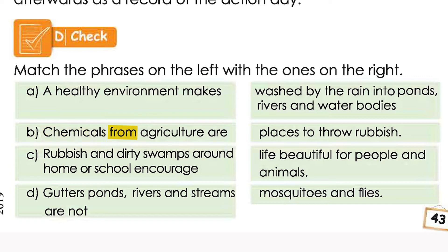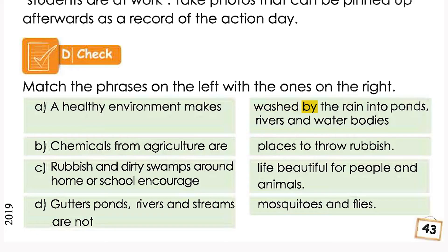A: A healthy environment makes. B: Chemicals from agriculture are. C: Rubbish and dirty swamps around home or school encourage. D: Gutters, ponds, rivers and streams are not. Chemicals from agriculture are washed by rain into ponds, rivers and water bodies.